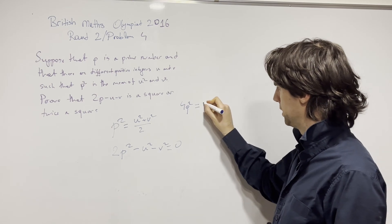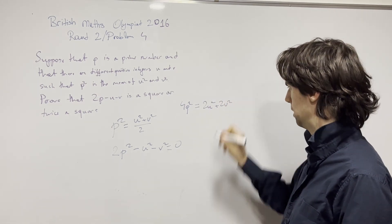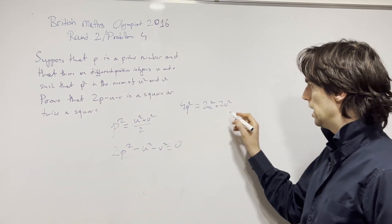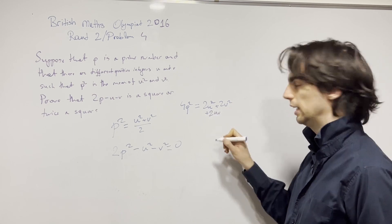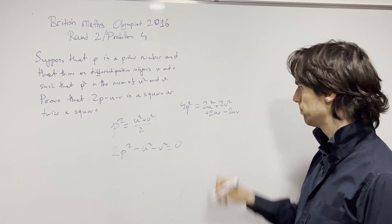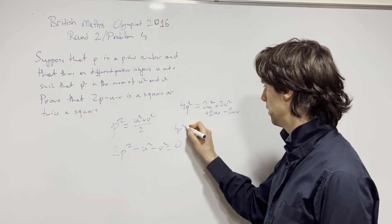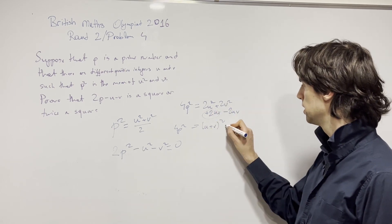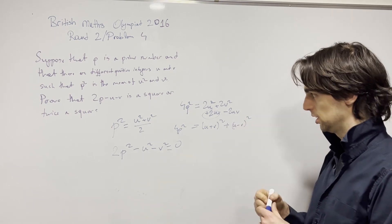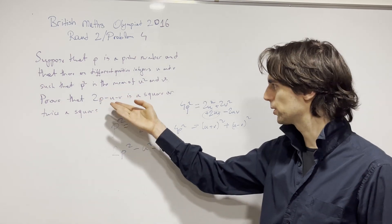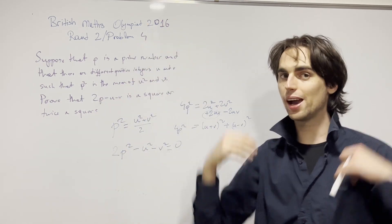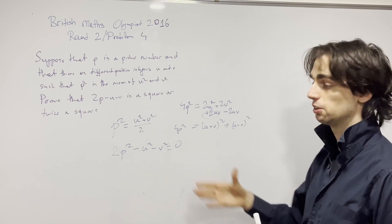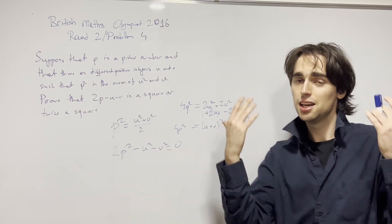Let me put things on the other side. I need (u + v)² on this side. I'll add 2uv and subtract 2uv, so now I can write: 4p² = (u + v)² + (u − v)². Now it makes sense how we're going to get 2p minus u minus v, and why it's a square or twice a square. I invite you to pause for 15 minutes and push the problem further with this idea in mind.